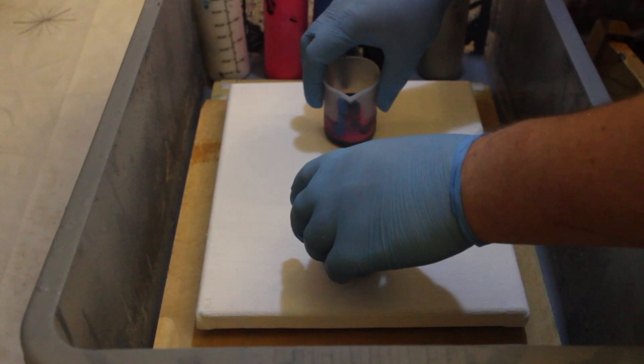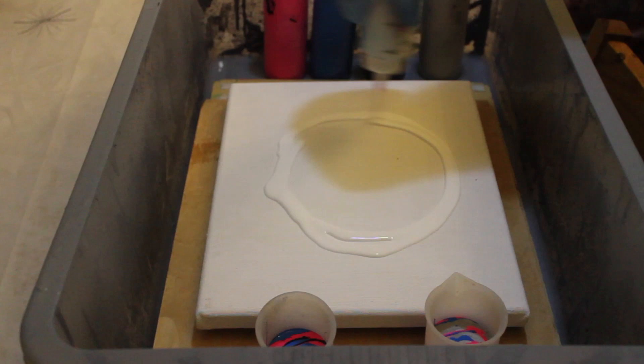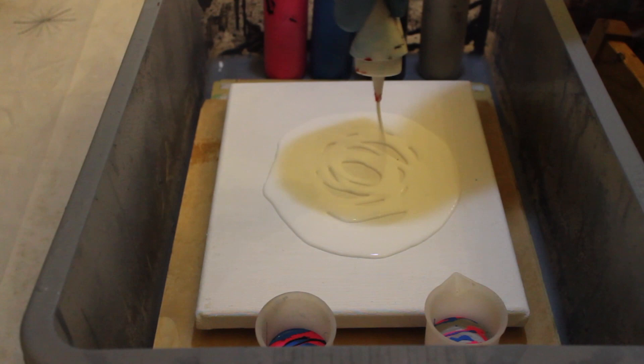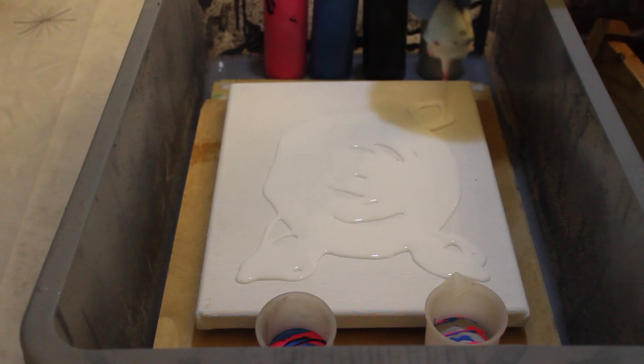The base coat is going to be, actually I've got to remember how you pronounce this, Pebeo White Acrylic. As you can see I'm just going to put it on the canvas so that we've got something to float the colors onto when we do a kiss pour.